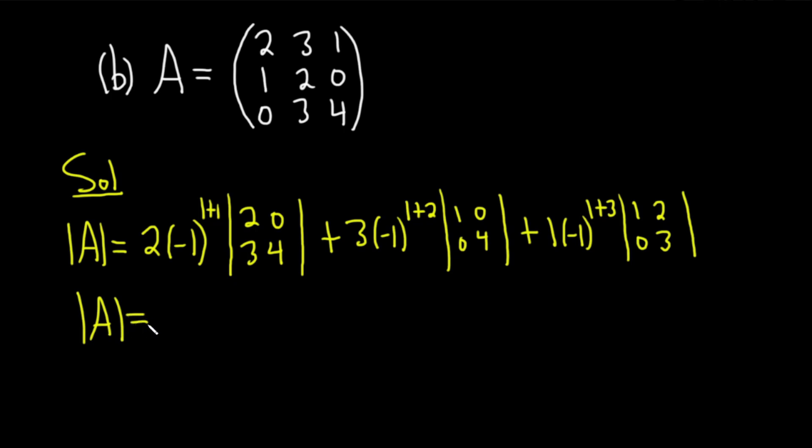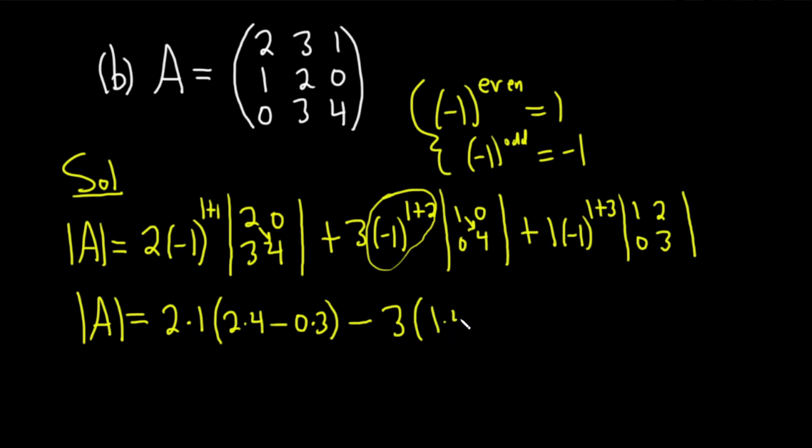So continuing in this fashion, the determinant of A. So useful knowledge here is whenever you have negative 1 to an even number, it's going to be 1. And whenever you have negative 1 to an odd number, it's going to be negative 1. We're going to use these facts to help make the simplification easier. So for example here, it's really negative 1 squared. So it's just 1. It's 2 times 1 times, and then determinant here, 2 times 4 minus 0 times 3. And you can skip steps. I'm going to show all of them. Here we have negative 1 cubed. Well, almost all of them. Negative 1 cubed is negative 1. So it'll be minus 3, right? Minus 3 because this becomes a minus 1. It's negative 1 cubed. 3 is odd, so you get minus 1. And we do 1 times 4 minus 0 times 0, right? 0 times 0.